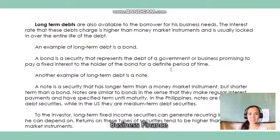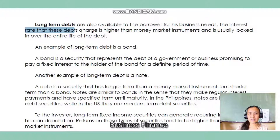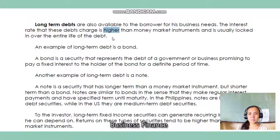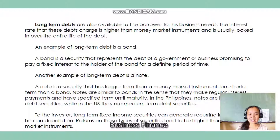Let's move on to long-term debts. Long-term debts are also available to the borrower for business needs. The interest rate that debts charge is higher than money market instruments and it's usually locked in over the entire life of the debt. So compared to money market instruments, long-term debts earn more. Money market instruments mature in less than a year, whereas long-term debts are locked in for the full term — two years, three years, and so on.